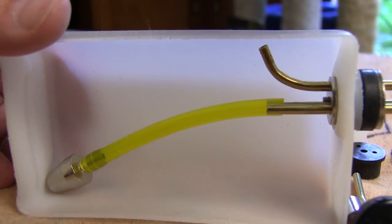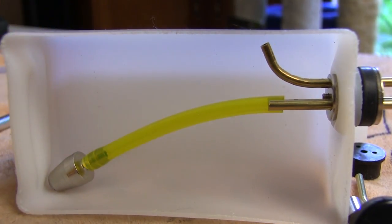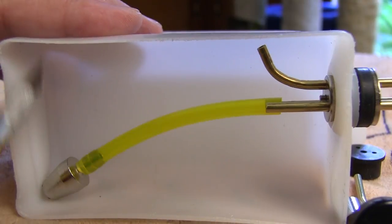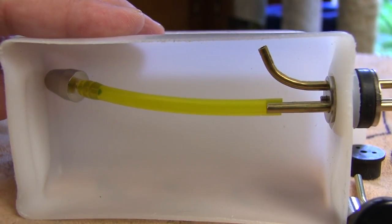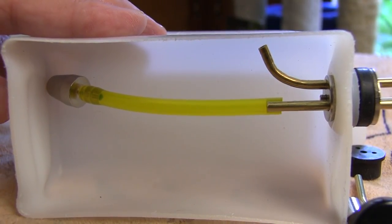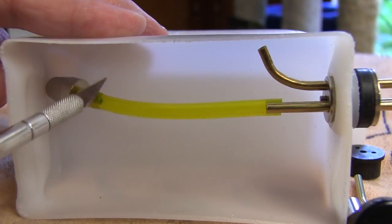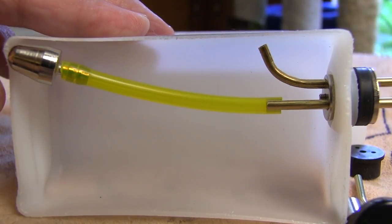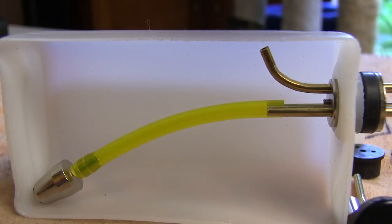A common problem we see with this kind of system is when people make this pickup line too long. Remember that some lines will get a little bit longer once they're exposed to gasoline for a while. If the line is long enough for that clunk weight to make contact with the back of the tank, it can get hung up and stay out of the fuel. If that happens, you get to see how good you are with a dead stick.